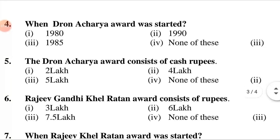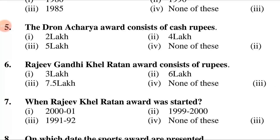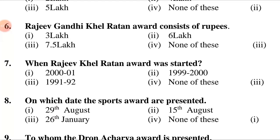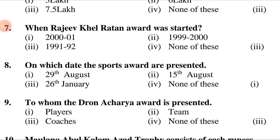The Dronacharya Award consists of cash rupees. First option: 2 lakh. Second option: 4 lakh. Third option: 5 lakh. Fourth option: none of these. The Dronacharya Award was introduced in the year: first option 2000-2001, second option 1999-2000, third option 1991-92, fourth option none of these. The answer is 3rd option, 1991-92.